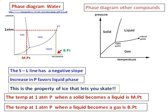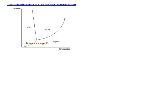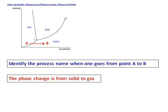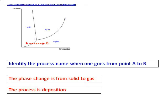The key point to notice is that in the case of water, the solid-liquid line has a negative slope. Now, some questions based on this phase diagram. A phase diagram is given, and we want you to identify the name of the process when one goes from point A to point B. When you look from point A to B, the transition is from solid state to gas state or vapor state. Whenever you change from solid to gas directly, we call it sublimation — or this reverse process is called deposition.